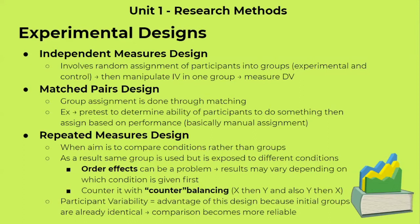A really good advantage of repeated measures design is good controlled participant variability at the beginning of the study. The initial groups are already identical because they are the same exact group. However, in matched pairs and independent measures, we would have randomly assigned groups that are not exactly identical — they might be theoretically identical, but not exactly. In repeated measures, we use the same exact group, so there is zero participant variability and the comparison becomes more reliable.